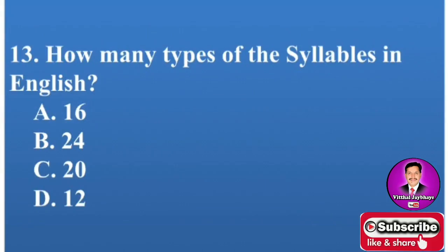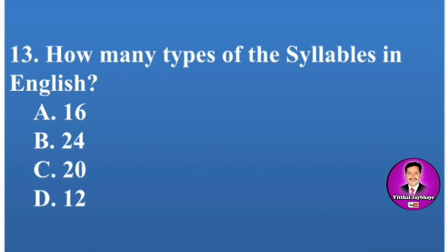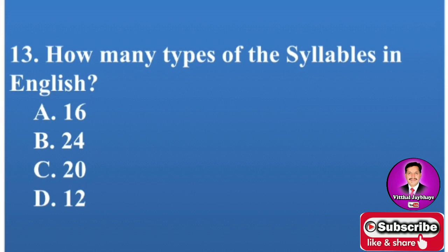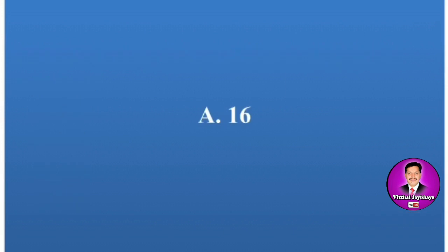Next MCQ: How many types of syllables are there in English? Options are A: 16, B: 24, C: 20, D: 12. There are 16 types of syllables in English. The correct answer is A — 16.